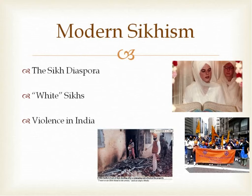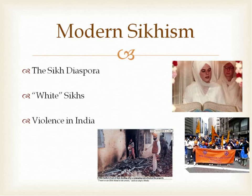This picture from Time Magazine in 1984 shows a Sikh family in front of their property after a rampaging mob attacked it. The caption reads: 'I want to see Sikh blood on the streets, said an angry Indian.' Even more recently, there have been situations of governors pursuing anti-Sikh policies, sometimes killed by bodyguards who happen to be Sikh. If you're going to be anti-Sikh, hiring Sikh bodyguards doesn't seem to make a lot of sense.